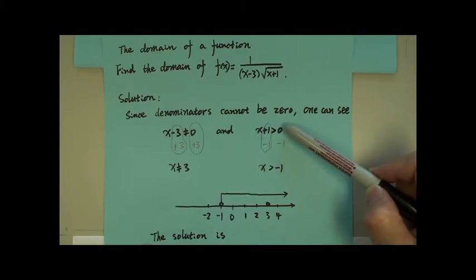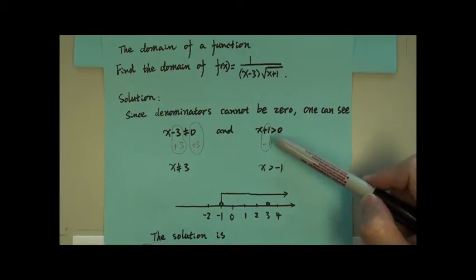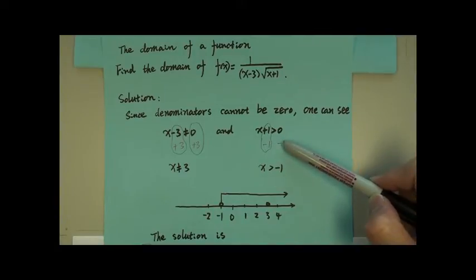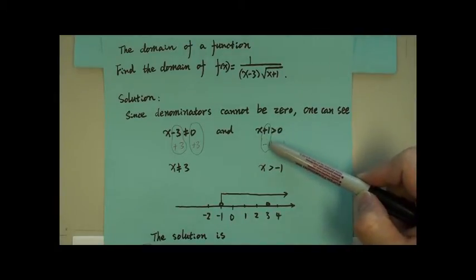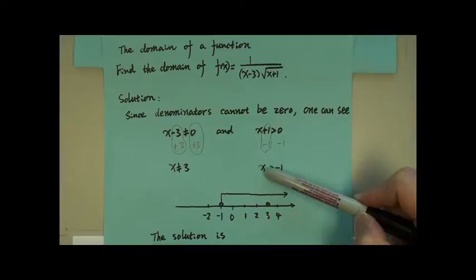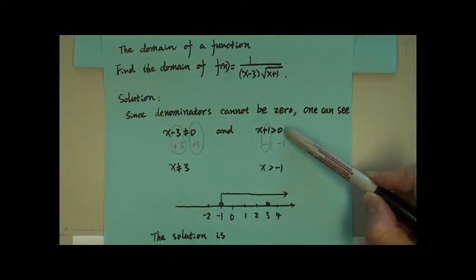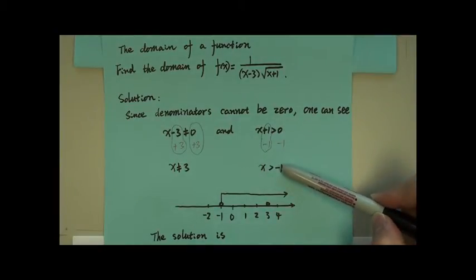x plus 1 is greater than zero. Minus 1 on both sides, cancel positive negative 1. x must be greater than negative 1, because zero plus negative 1 is negative 1.